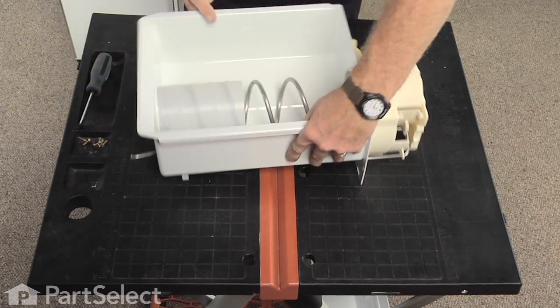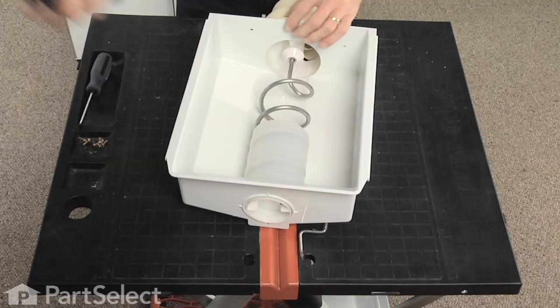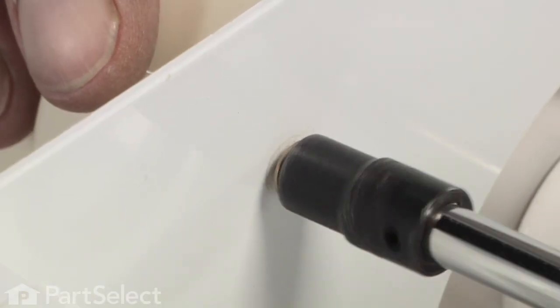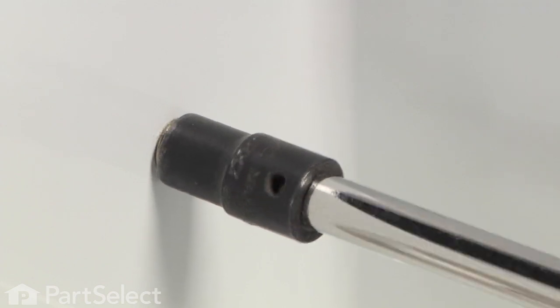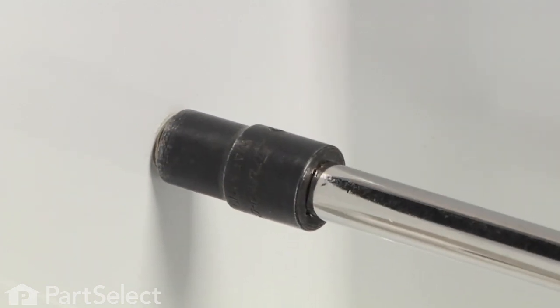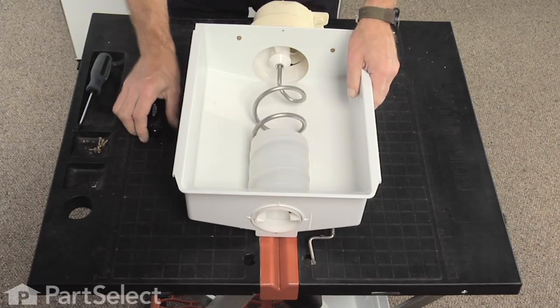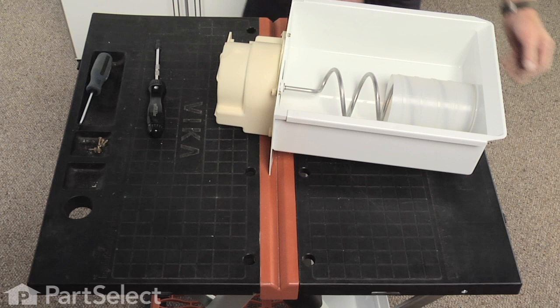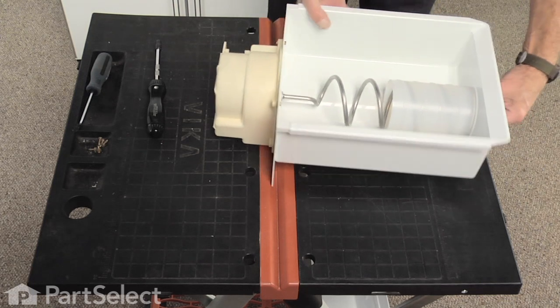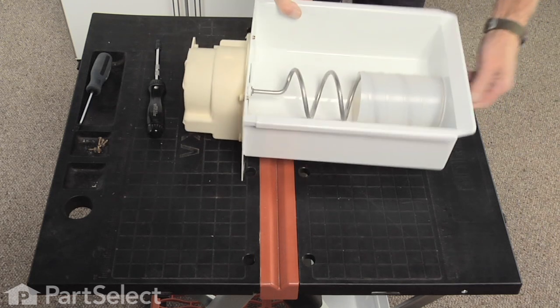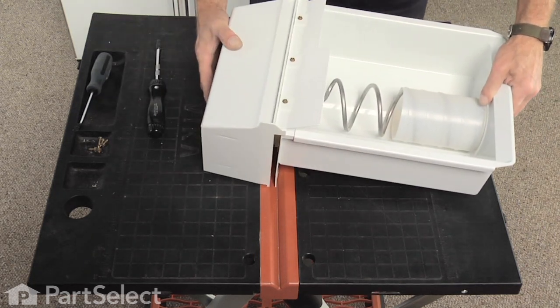Next, install three inside quarter inch hex head screws to secure the housing to the bin. Check the rotation of the auger, make sure it turns freely, and we're ready to put the front housing on.